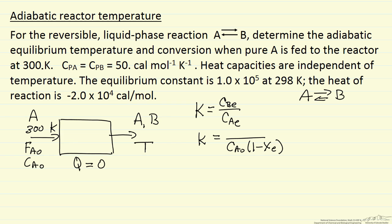We convert 40%, 60% remains. The concentration of B, since we only feed A to the reactor, is what fraction of A is converted since the stoichiometry is 1 to 1. So we're going to use this to relate fractional conversion to equilibrium constant. We're given the equilibrium constant at one temperature, 298 Kelvin, and the heat of reaction, so we can calculate the equilibrium constant at other temperatures.